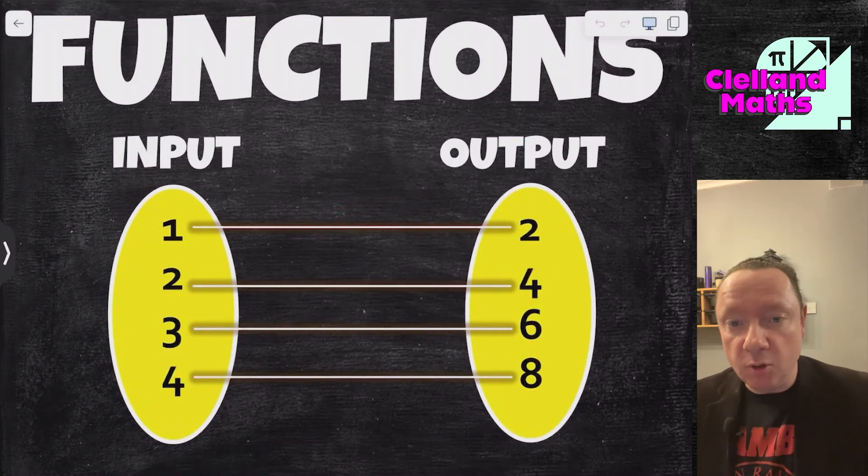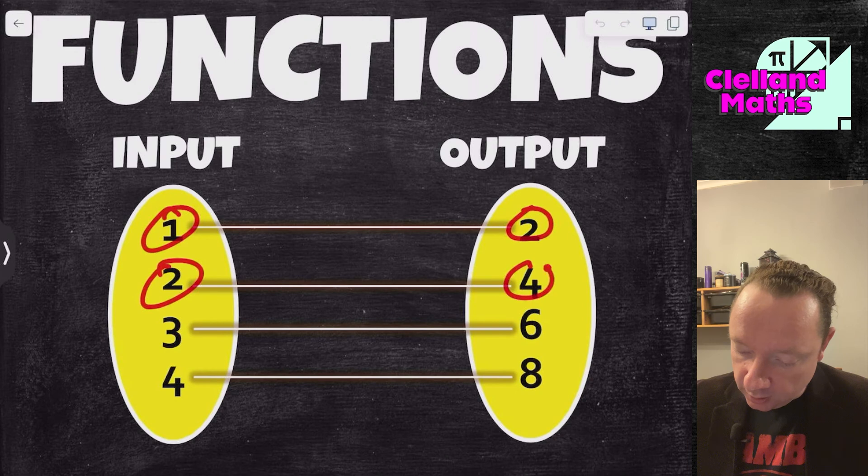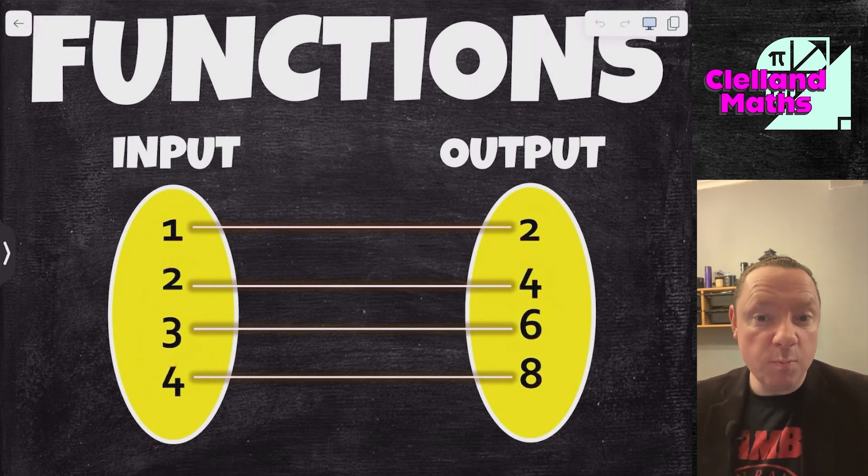Now that instruction could be something simple like add 1, take away 1, times or divide. Or it could be something much more complicated. But in this case for this function, 1 goes to 2, 2 goes to 4, 3 goes to 6 and 4 goes to 8. So I'm times by 2.